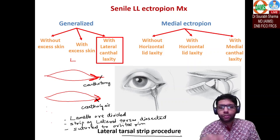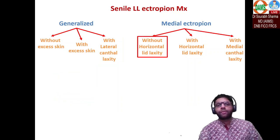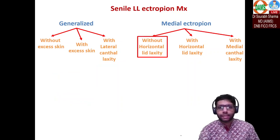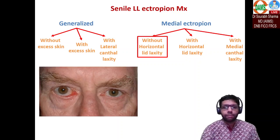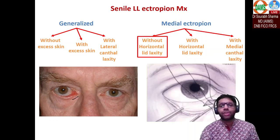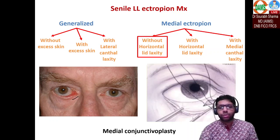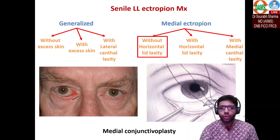For medial ectropion without any horizontal laxity — where only the medial part of the eyelid is coming out — a medial conjunctivoplasty is done. You give an incision in the medial conjunctiva and tighten it so that the medial half goes inside.